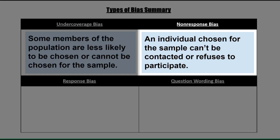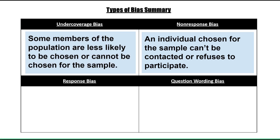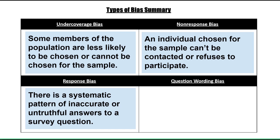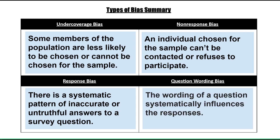With non-response, all members of your population have a chance to participate equally, but usually because of the way researchers decide to contact subjects, some do not get the opportunity to respond or they refuse to respond, even though they made the list of those to be sampled. Third is response bias, which occurs when there's a systematic pattern of inaccurate or untruthful answers to a survey question. And last is question wording, where the wording of a question systematically influences the responses.